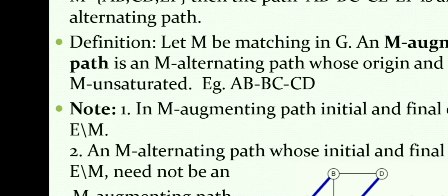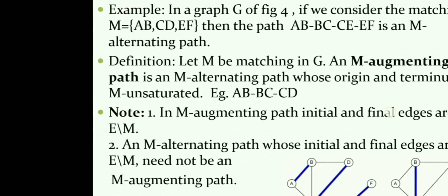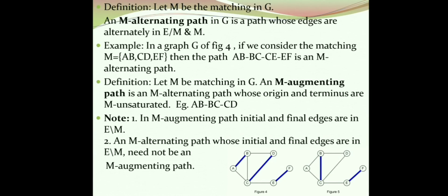The next definition is M-augmenting path. Let M be matching in G. An M-augmenting path is an M-alternating path whose origin and terminus are M-unsaturated. Now in the same figure, consider the path A-B-C-D. AB is in E minus M, BC is in M, and CD is in E minus M.